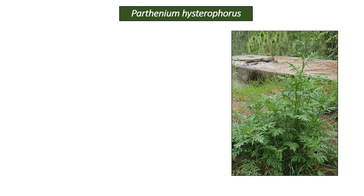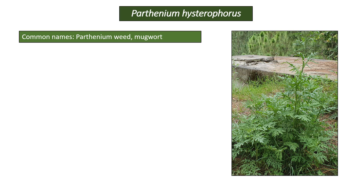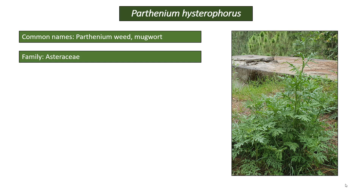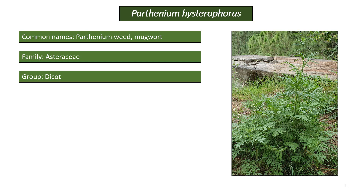In this presentation we will be talking about Parthenium hysterophorus. It is commonly known as parthenium weed, mugwort, and more. It belongs to the family Asteraceae under the group dicot.